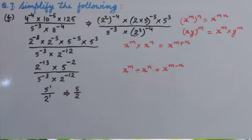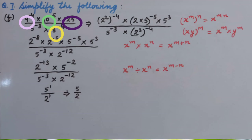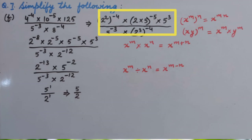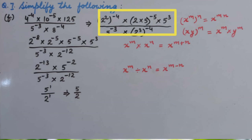Similarly, Part F: 4 raised to the power minus 4, multiplied by 10 raised to the power minus 5, multiplied by 125 upon 5 raised to the power minus 3, multiplied by 8 raised to the power minus 4. Biggest composite numbers are given, so we will prime factorize. Hence we get 2 squared whole raised to the power minus 4, multiplied by 2 multiplied by 5 whole raised to the power minus 5, multiplied by 5 raised to the power 3 upon 5 raised to the power minus 3, multiplied by 2 raised to the power 3 whole raised to the power minus 4.